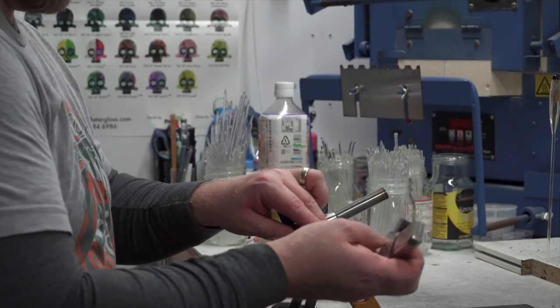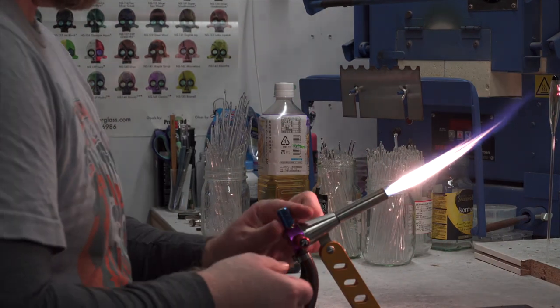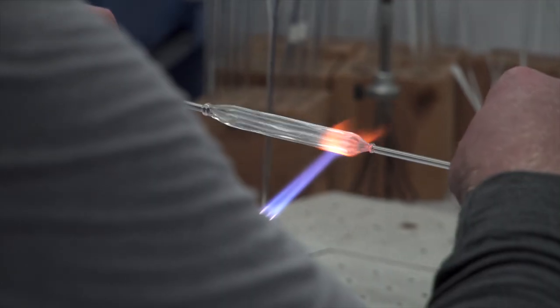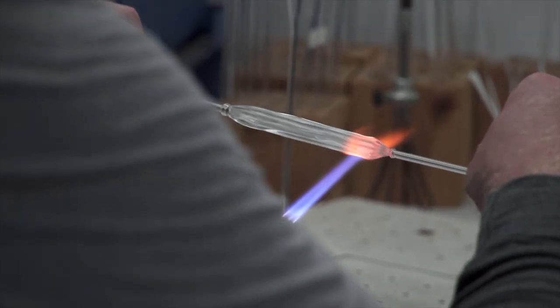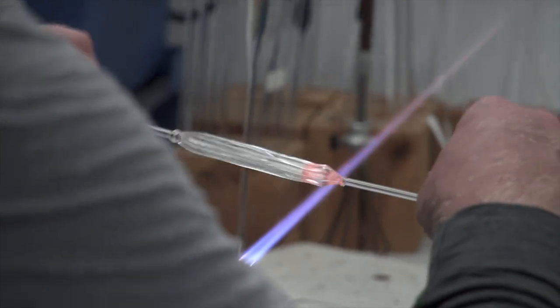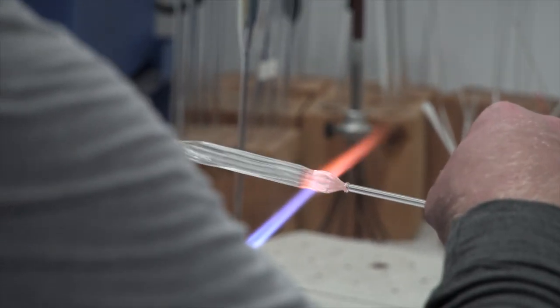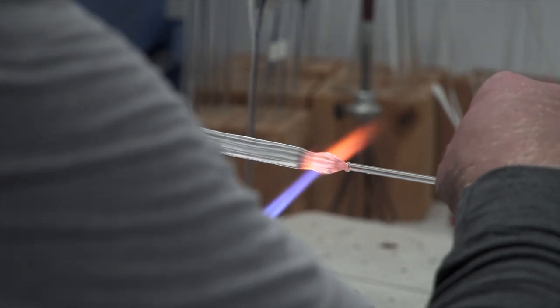Now he's switched to a smaller torch since he'll be working with the nib. He's pulling off a piece of what he calls the nib cane to make a nib. Lucas makes all of his own nibs. He doesn't attach pre-made nibs.